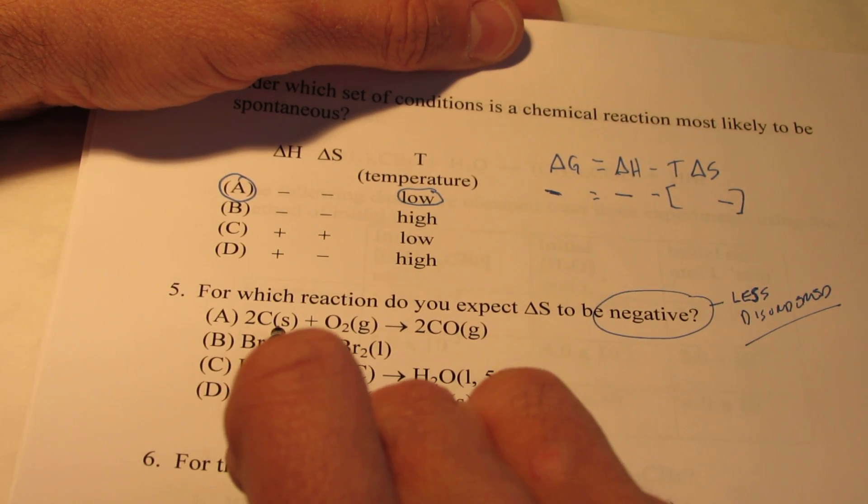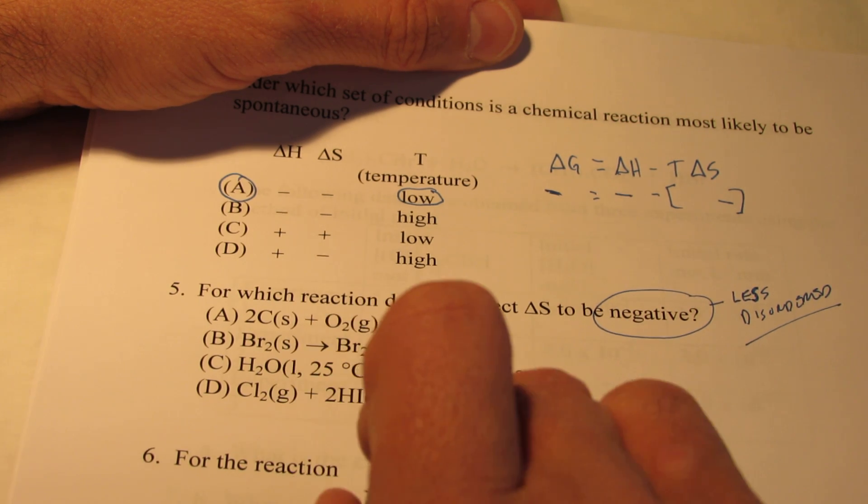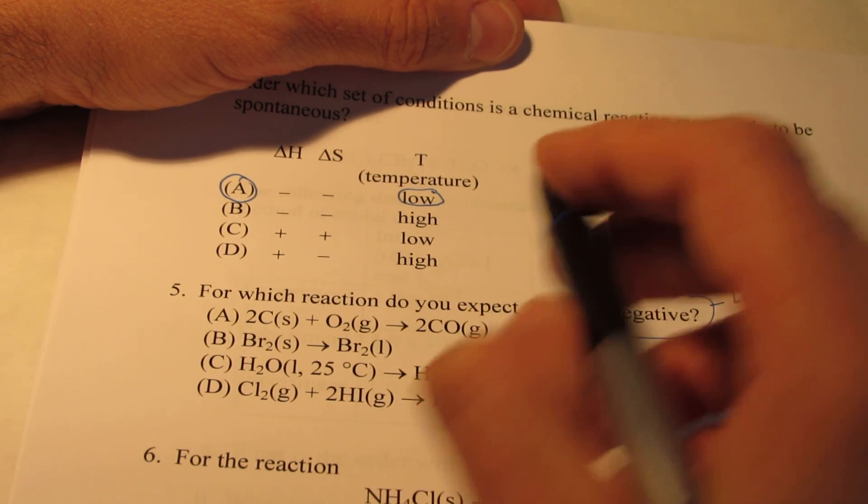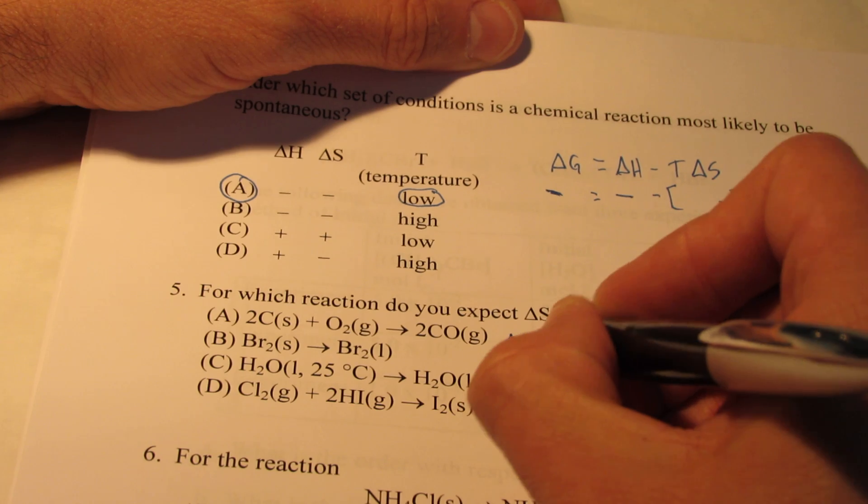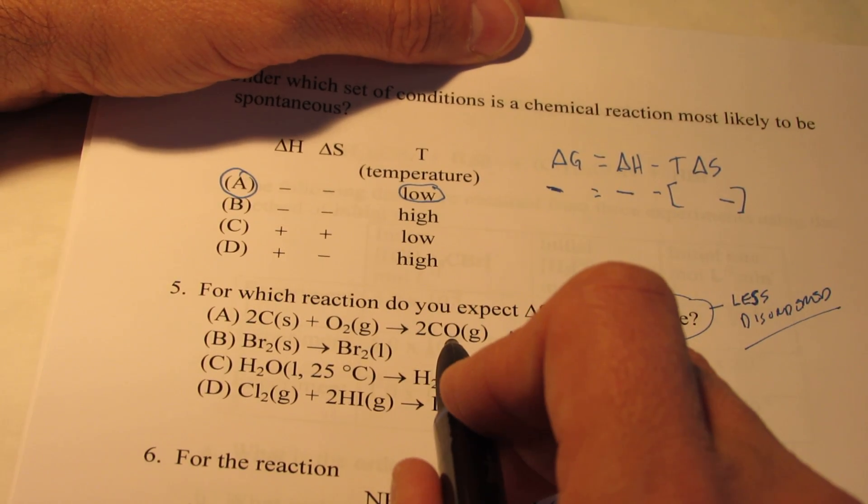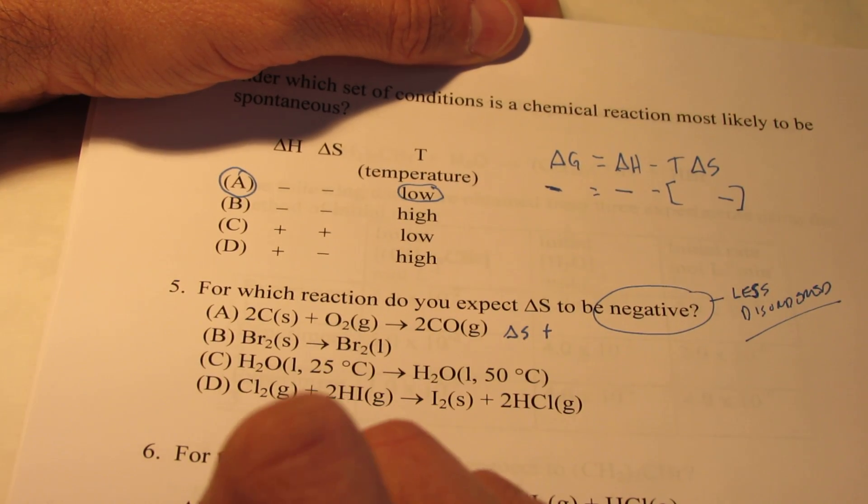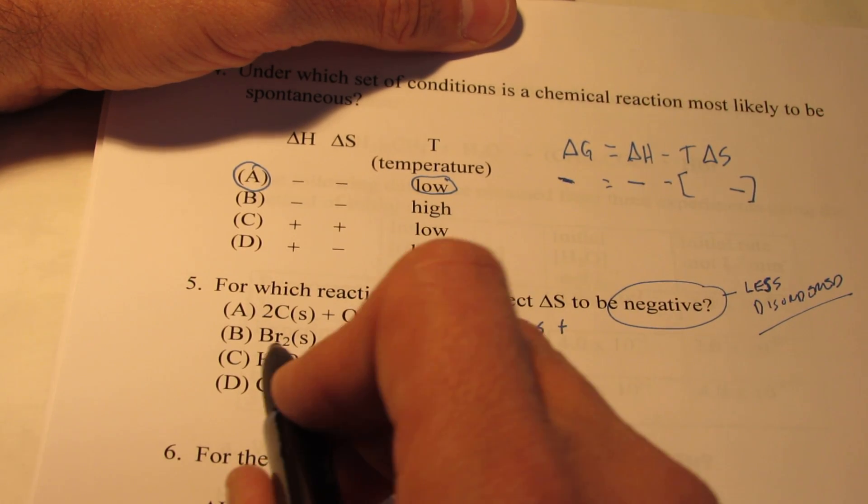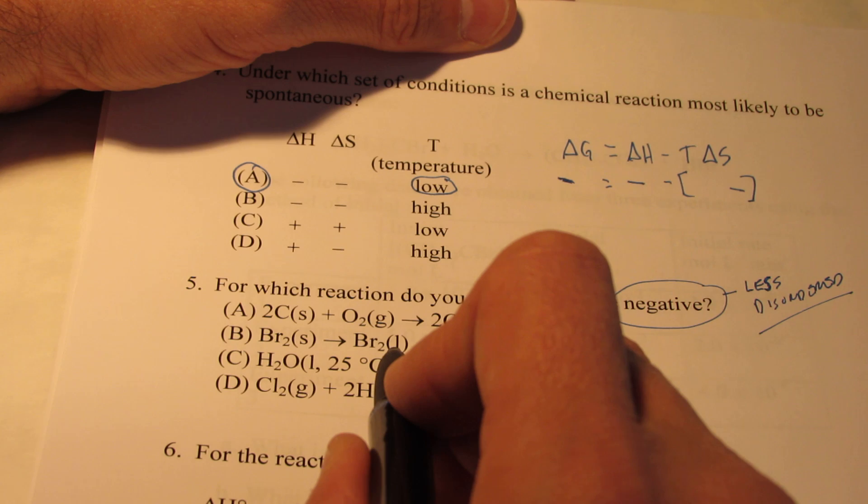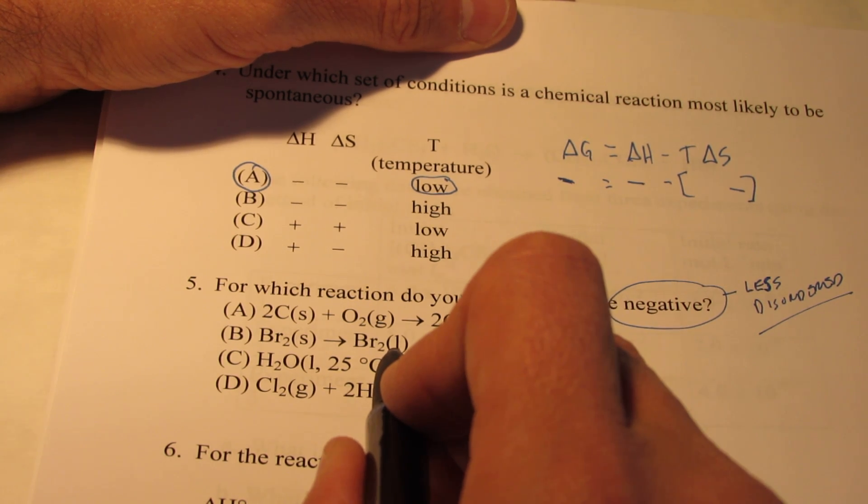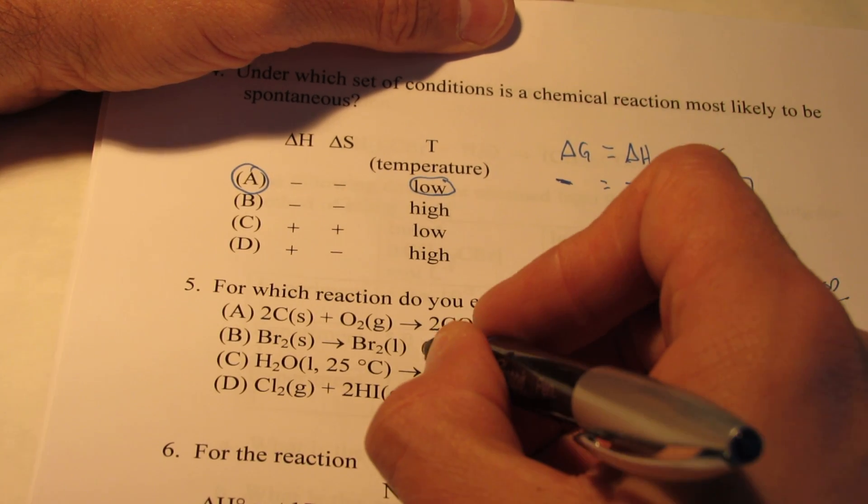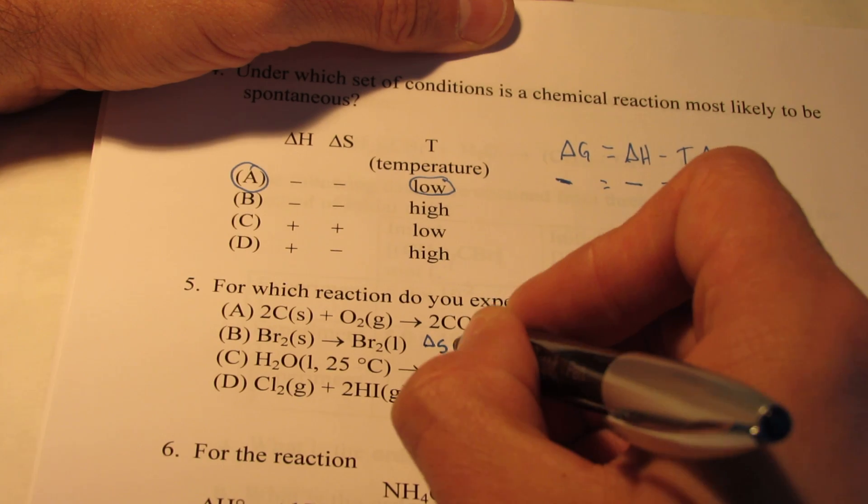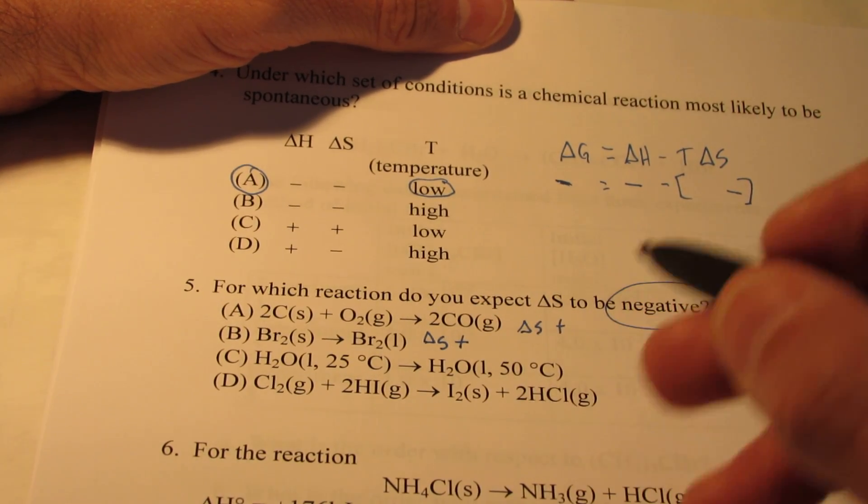On letter A we start with two solids and a gas, and we turn it into two gases. Here delta S would be positive, because we end up with two gases from one. Let's take a look at letter B. Here we have solid bromine turned into liquid bromine. Well, we learned earlier that liquids are more disordered than solids, so delta S for that reaction would be positive as well.